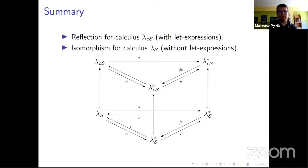So in summary, we have established a reflection for this calculus with let expressions. And using this fact, we also managed to establish an isomorphism for calculus which has no let expressions. So there's this one-to-one correspondence. And this correspondence is also respective of reductions in both calculi.